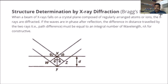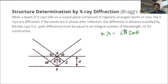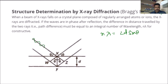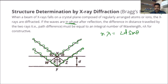Structure determination by x-ray diffraction using Bragg's equation: n lambda equals 2d sin theta. When a beam of x-rays falls on a crystal plane composed of regularly arranged atoms or ions, the x-rays are diffracted. We represent the ray as a straight line, but remember a wave actually oscillates as it travels and reflects.